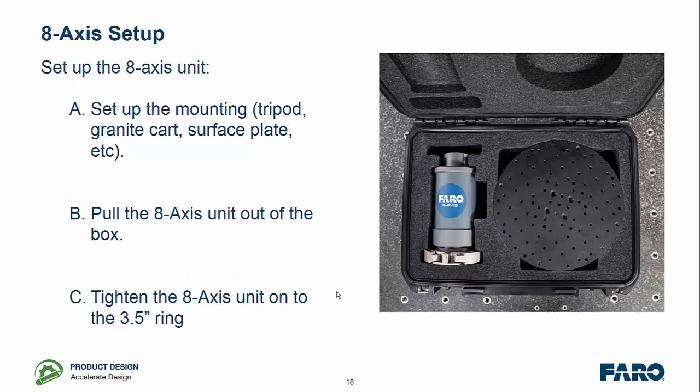Setting up the 8-axis unit is very simple. Depending on where you're mounting it, you can use the mounting plate provided or you can mount it on top of a tripod. You pull the unit out of the box and you tighten it onto the 3.5-inch ring to make it secure.